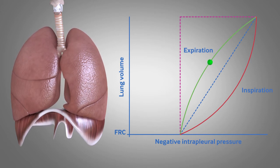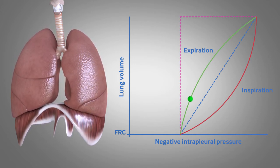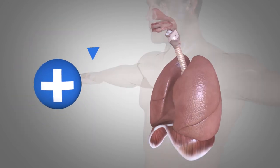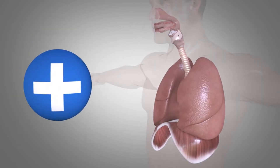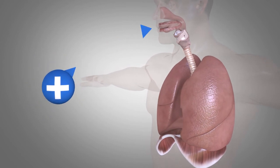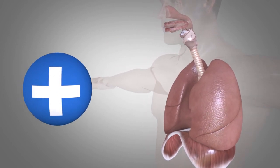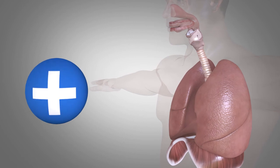Lung volume decreases as the pressure becomes less negative and air flows out of the lungs. This is an important concept to understand when considering mechanical ventilation, which is positive pressure ventilation. So instead of air being sucked in down a pressure gradient, it is blown in under positive pressure.